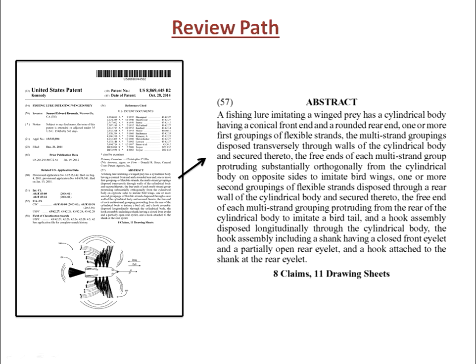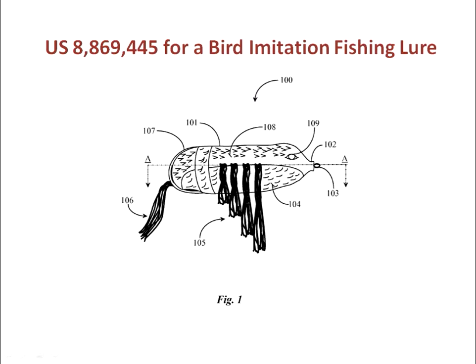We have enlarged the abstract, which describes salient features of the lure. The heart of the matter is that there were no lures imitating birds before Sam Kennedy's lure. Here is figure one of the bird lure patent, which shows a side elevation view with the lure out of water. The body, wings, tail, and other elements are shown and have element numbers and witness lines according to the convention that we propose.